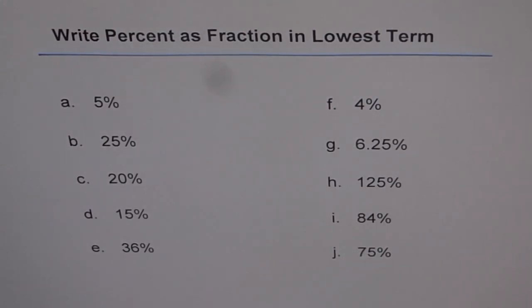Write percent as fraction in lowest term. Here we have a lot of examples for you and what you need to do is first write them as a fraction. That means percent over 100, and then try to reduce it to the lowest terms. Now you can copy and make a copy of this page.